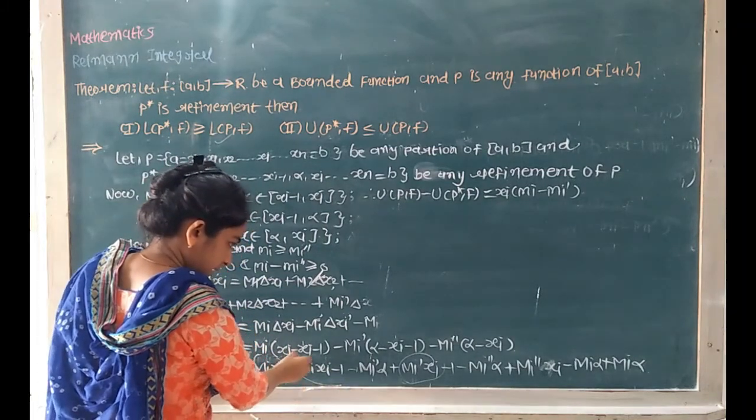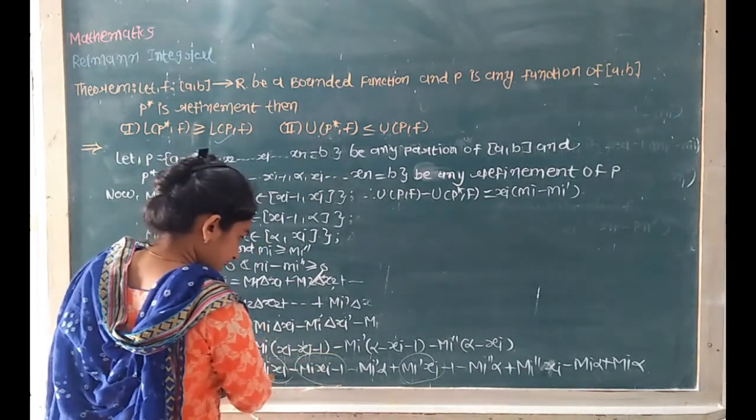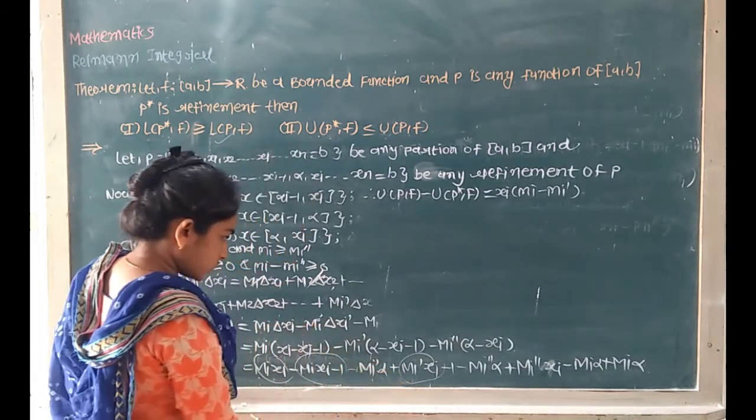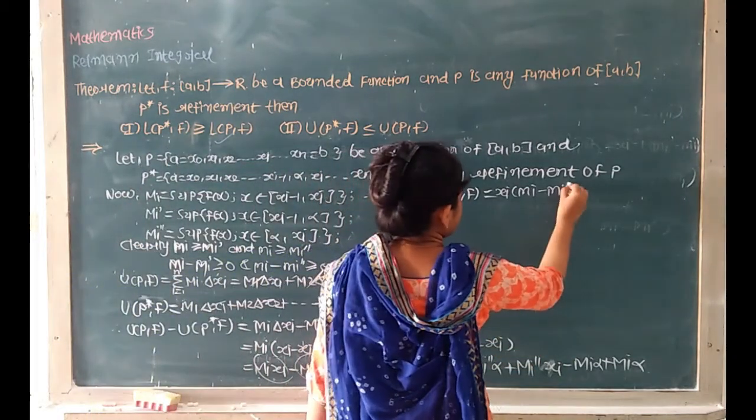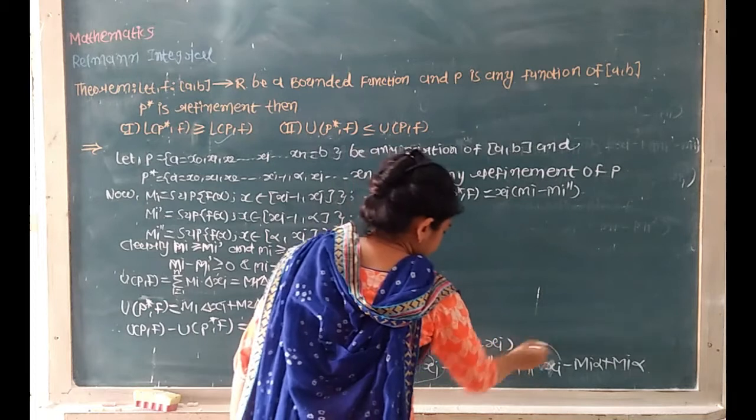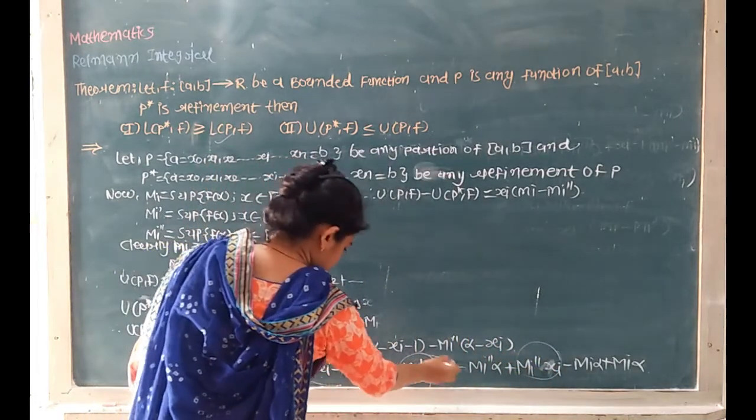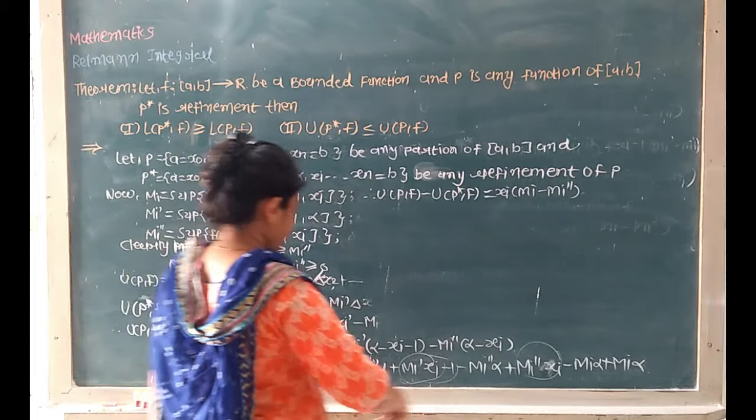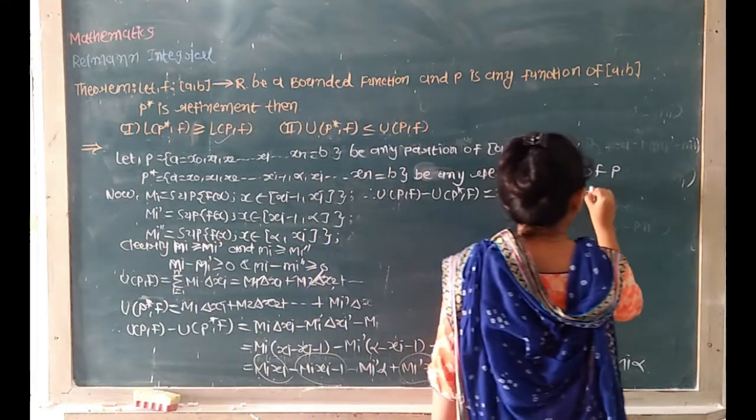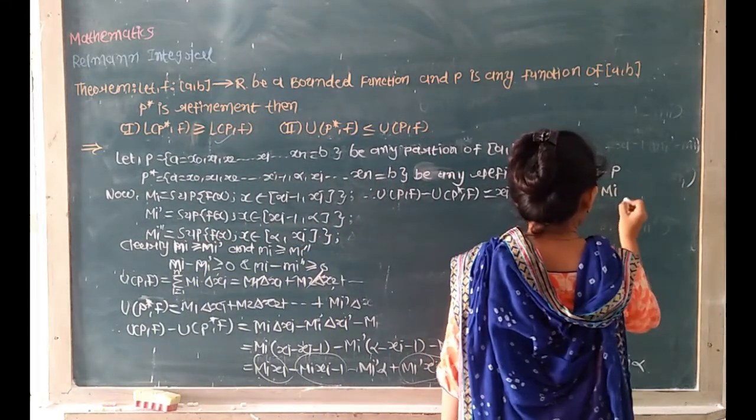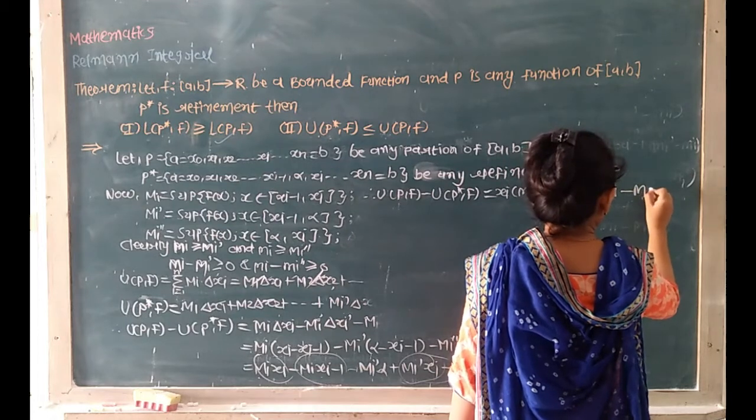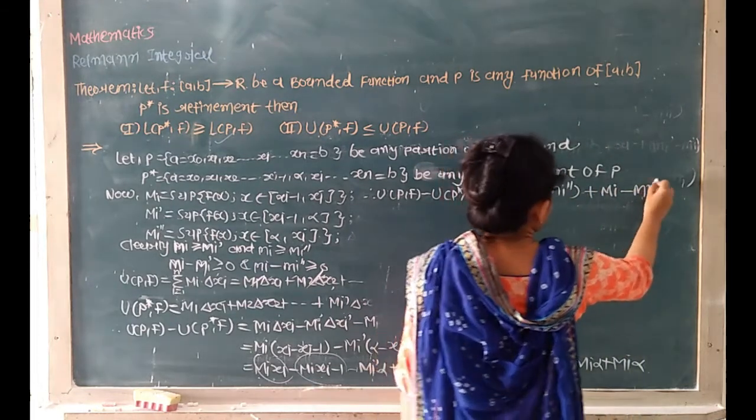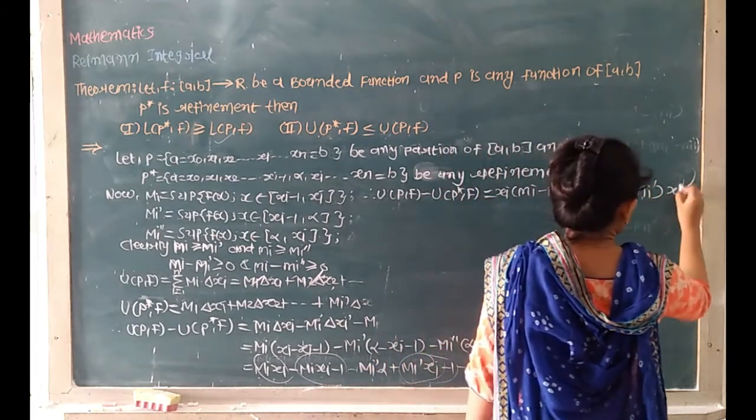We will find out that we are going to get Mi times xi minus Mi times alpha. The moment is far away, so UPF minus U star F equals Mi times xi common factor, so Mi times (xi minus xi minus 1) common factor, Mi minus Mi double dash times (xi minus xi minus 1).